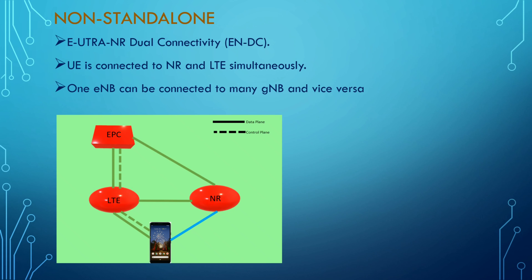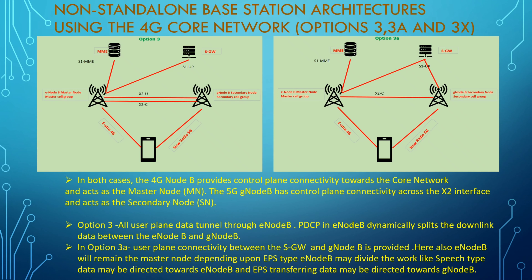The non-standalone architecture, which uses the 4G core network, is divided into three types: Option 3, 3a, and 3x. In Option 3, we have two separate nodes — eNodeB acts as the master node and gNodeB acts as the secondary node, through which the UE is connected. The eNodeB is connected to the LTE MME.